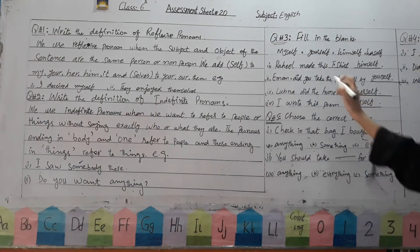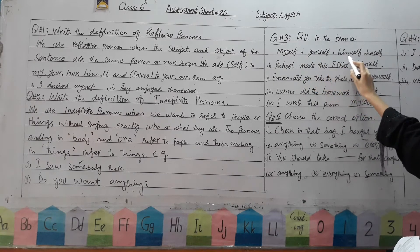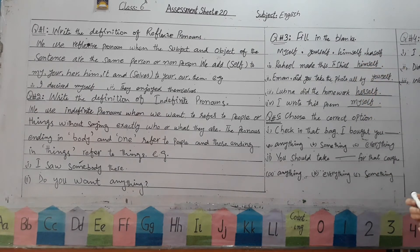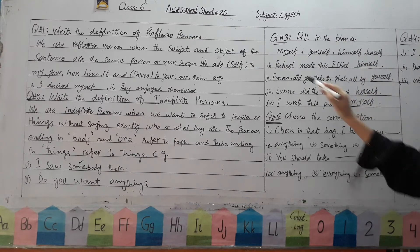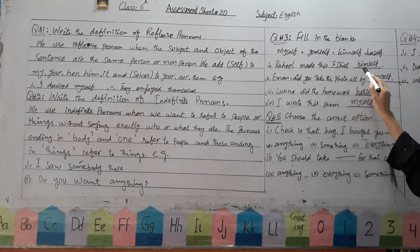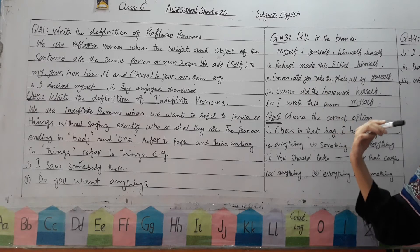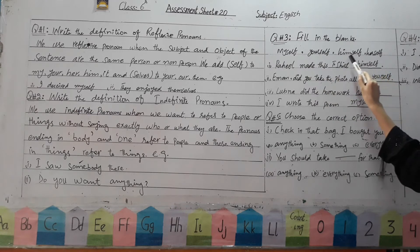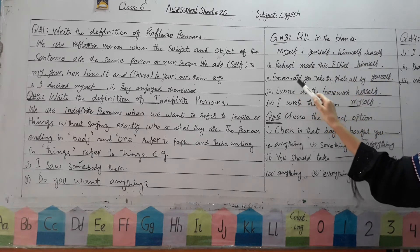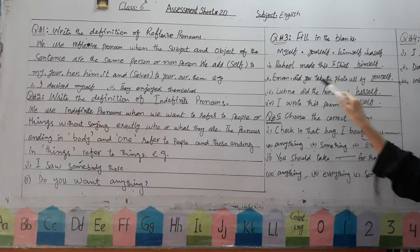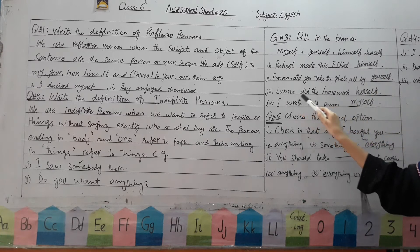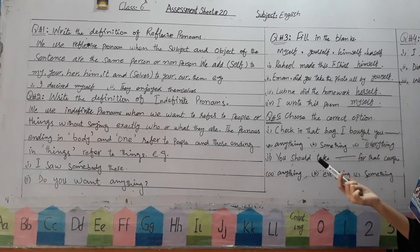Now come to the next question: fill in the blanks. Reflexive pronouns are given — myself, yourself, himself, herself. First sentence: Raheel made this t-shirt ___. Raheel is 'he', singular, so we use 'himself'. Second sentence: Iman, did you take the photo all by ___? 'You' is used, so we add 'yourself'. The right answer is yourself.